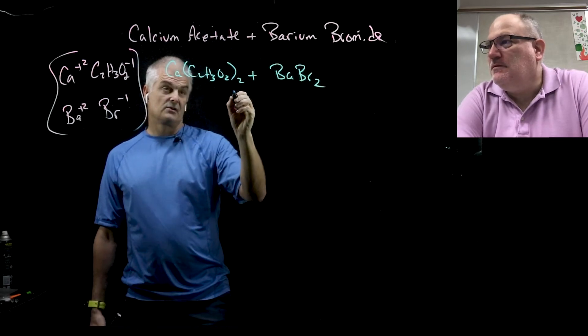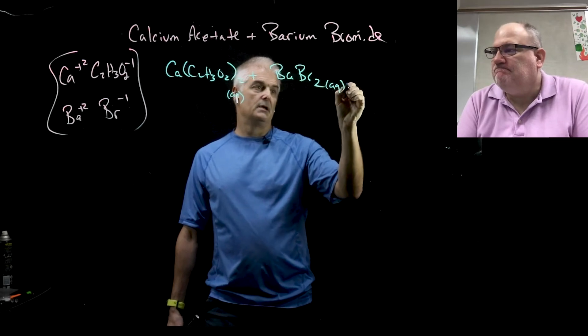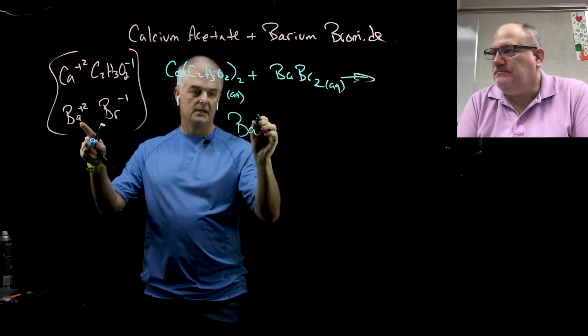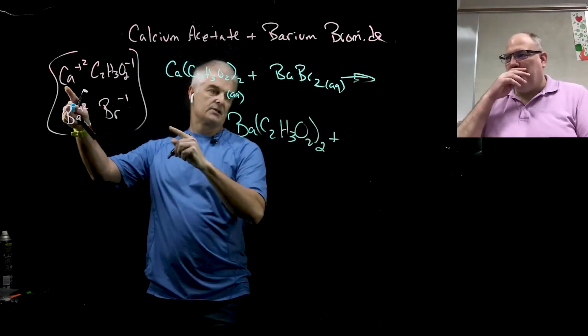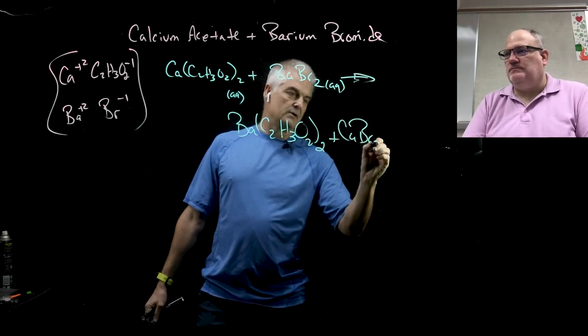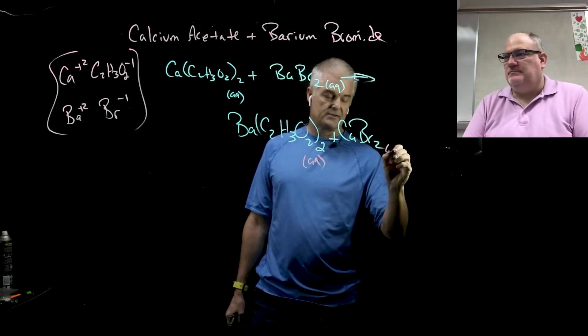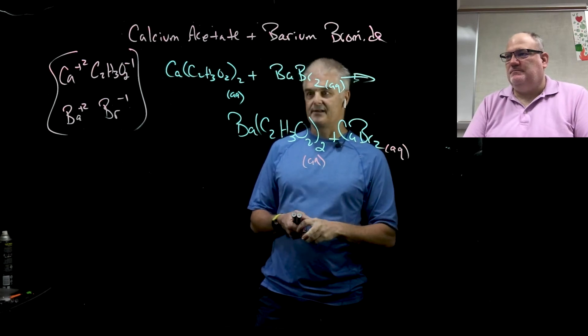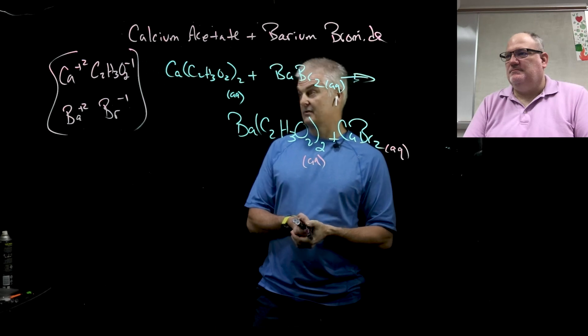We look at this one and this one, what do we get? These are from the table right here. They're both aqueous, and they're going to make barium acetate, so that's Ba(C2H3O2)2 plus calcium and bromide together, CaBr2. Now we need to look at the table again. Barium acetate is aqueous, and the calcium bromide is also aqueous. Wait, so it's like calcium took acetate to the dance, barium took bromide to the dance, and they didn't actually trade partners.